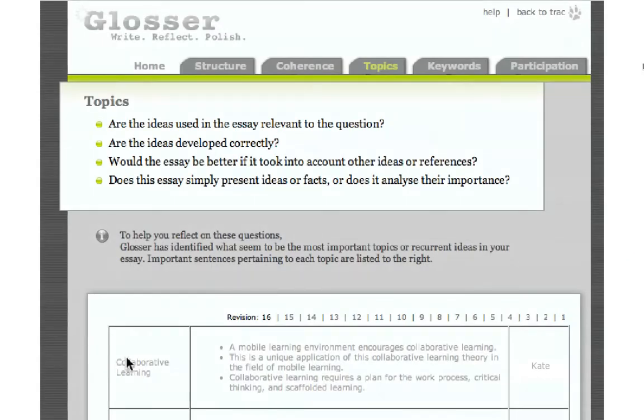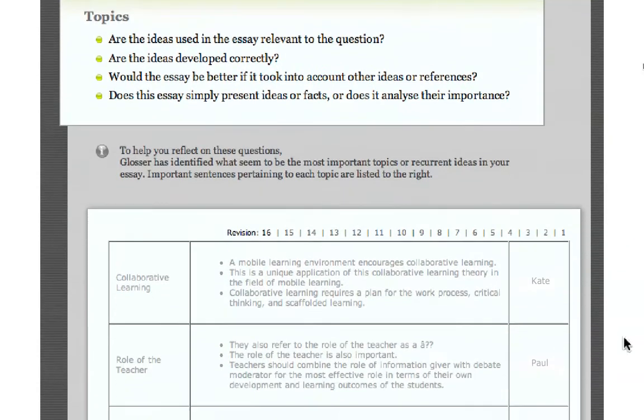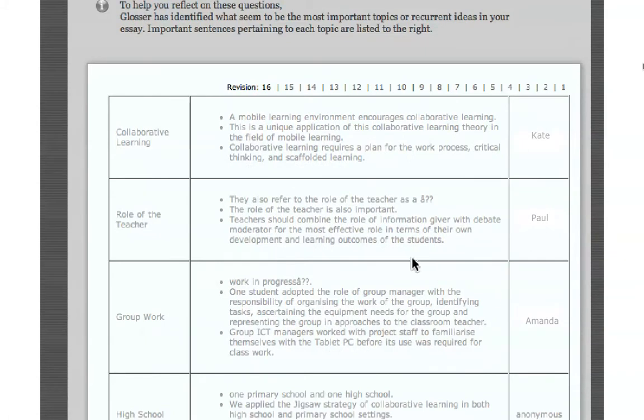In the topics section, Glosser extracts the most important topics or recurrent ideas in the essay. It lists the sentences that make reference to each of these topics and the author that has written most about each particular topic.